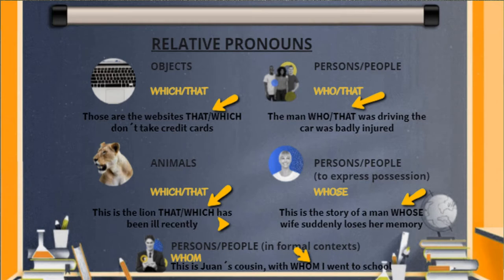For a man, you use who or that: the man who was driving the car was badly injured. In those cases, we translate them in Spanish as 'que': El hombre que conducía el coche resultó herido. To express possession, we use whose. For example: this is the story of a man whose wife suddenly loses her memory. In Spanish, we translate it as 'cuyo', 'cuya', or 'de quien'.